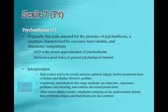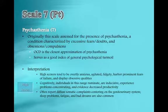Scale seven is psychasthenia. The scale was originally designed to assess conditions that might be characterized as somebody with excessive fear or doubt, and it's been used to look at obsessive-compulsive disorders.